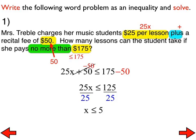So here's what I want you to do. I want you to turn to your shoulder partner, and between the two of you, I want you to come up with a sentence that will represent what we are looking for here. We are looking for this. It says, how many lessons can the student take if she pays no more than $175? Go ahead. Get together with your shoulder partner. You have about 45 seconds to come up with a sentence.